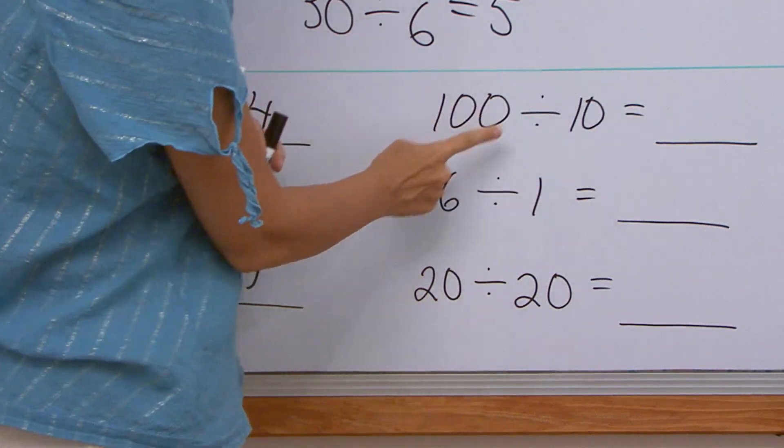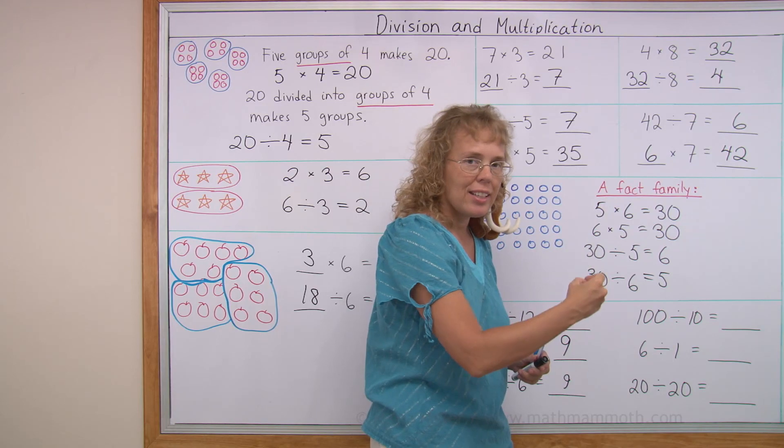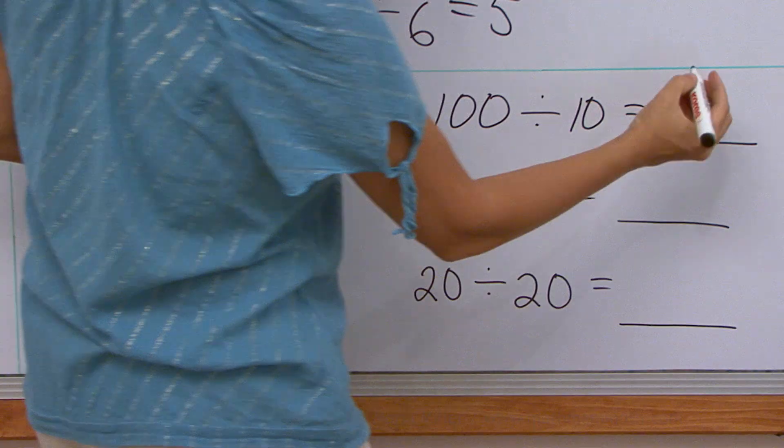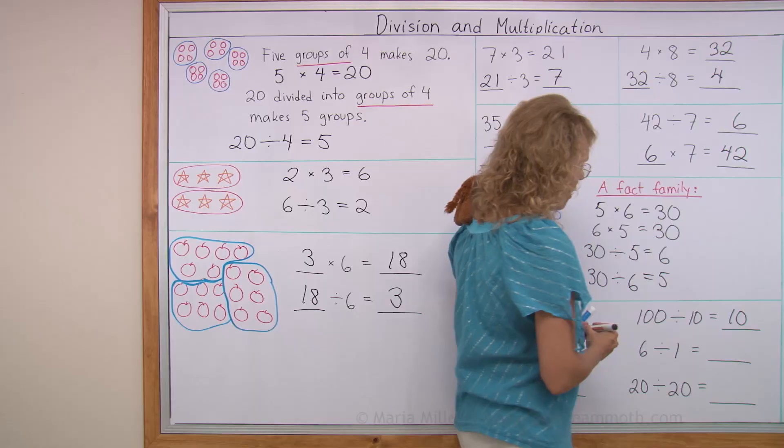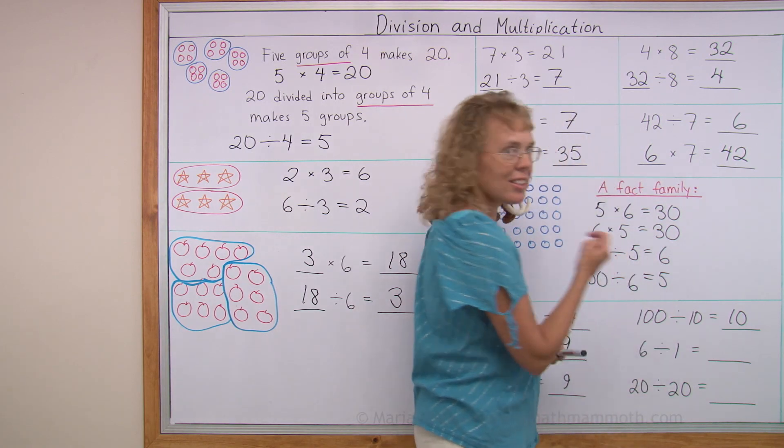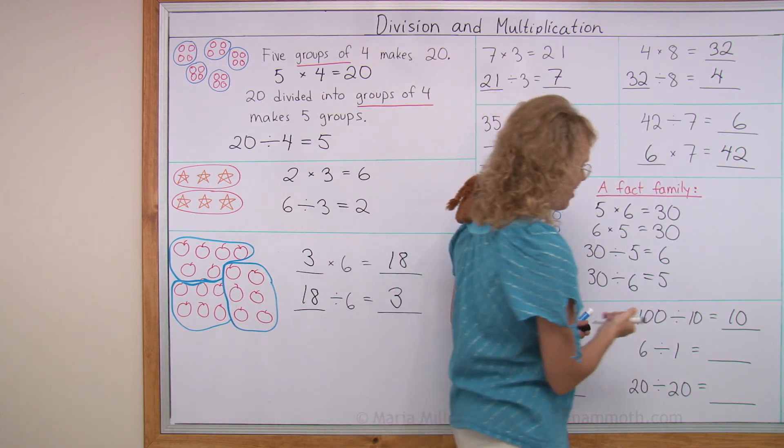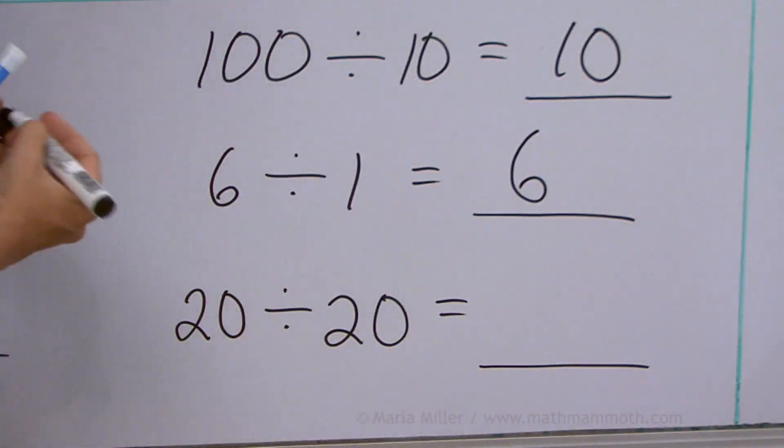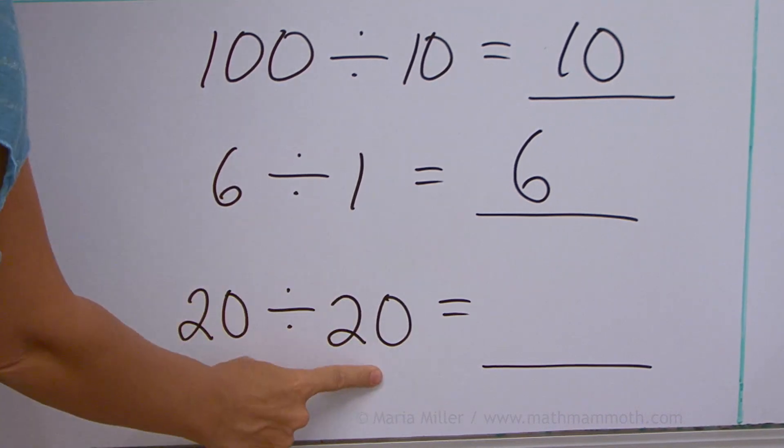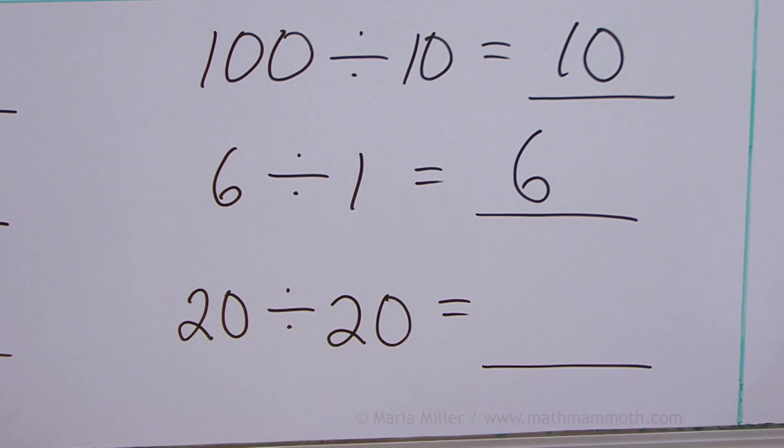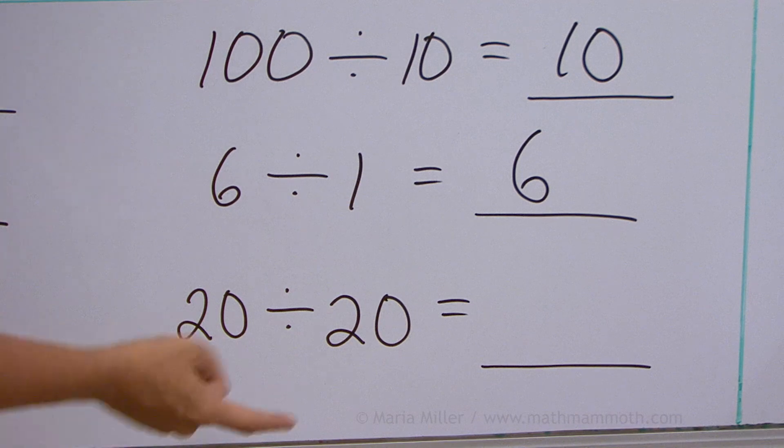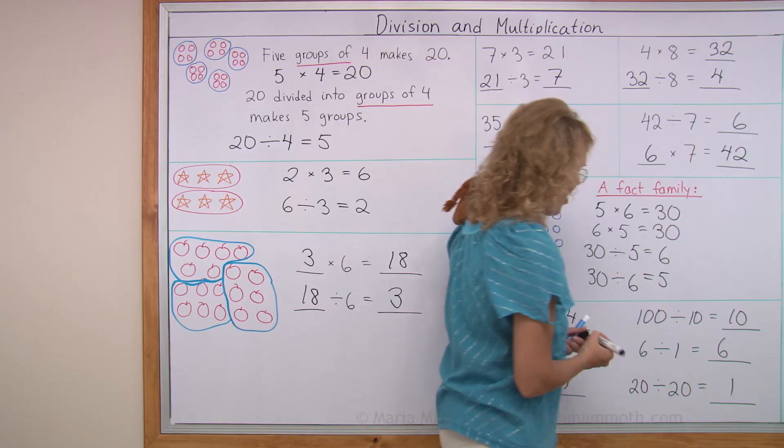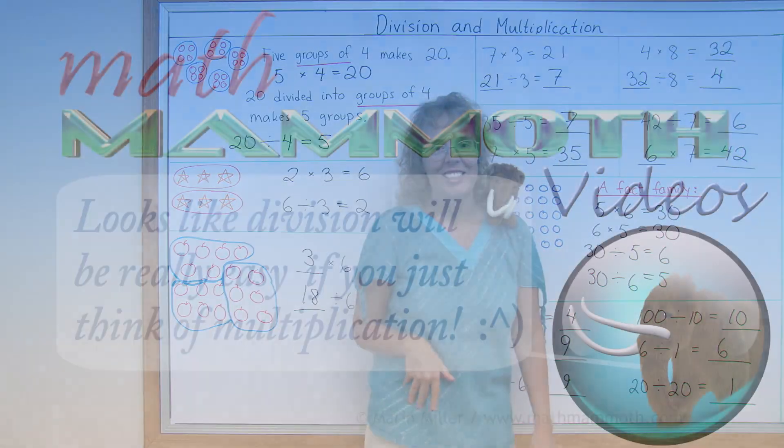Over here, how many tens are in 100? How many times 10 equals 100? 10 times 10. How many ones are in 6? Well, 6 ones. And lastly, how many 20s are in 20? How many times 20 makes 20? Just 1. Okay, there we go. Well done with this lesson.